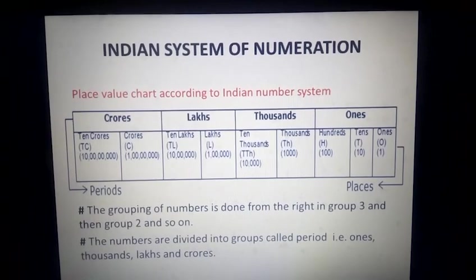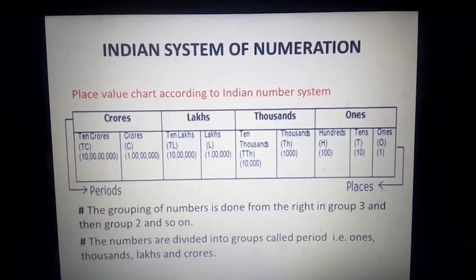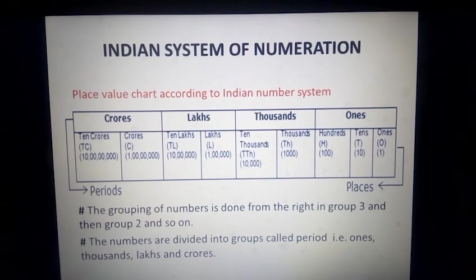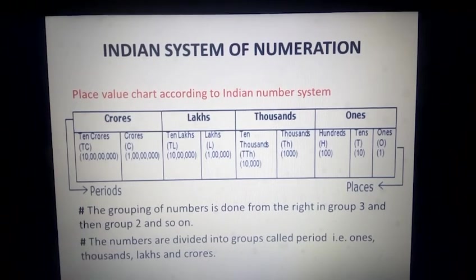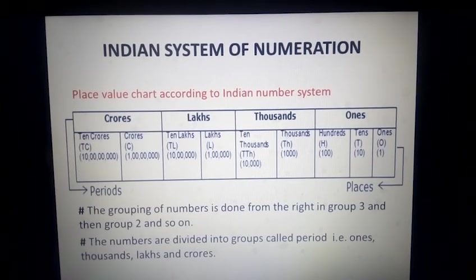So in the Indian number system, how do we actually represent a number? As you can see, here is a place value chart which is made according to the Indian number system. The representation of a number is done in groups. The number is divided into groups, and those groups are called periods, namely ones, thousands, lakhs and crores. And we always start the grouping of any given number from the right corner.